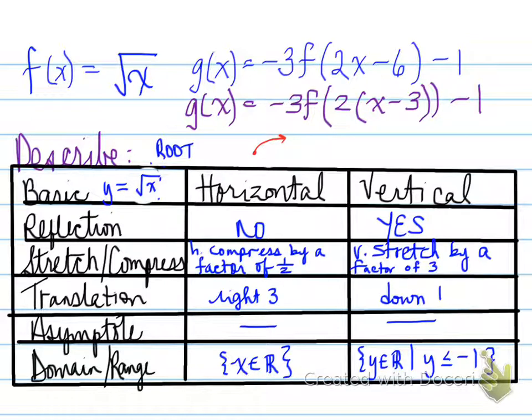Well, the only part that changes for us is down in the domain and range. Obviously, our domain would change, so that we have the following. Instead of x belongs to real stop, we'll have x belongs to real, such that x, in this case, is because it moved right 3, x will be greater than or equal to 3. Now, for the range, it moved down 1, and it had a reflection. So what that means is now our range will be y is less than or equal to negative 1.